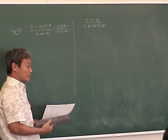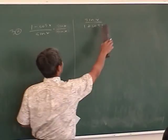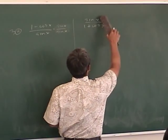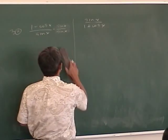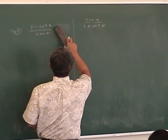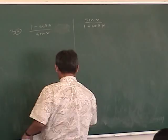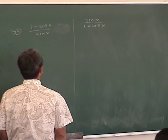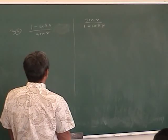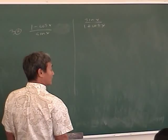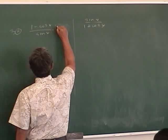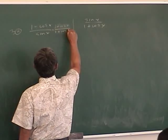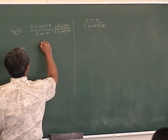Or you can multiply top and bottom by sine x, since sine squared x has an identity: 1 minus cosine squared x. Or you can multiply by the conjugate of the denominator, 1 minus cosine x. So there are four things you can do, and if you just do one of them it comes right out. Remember this technique — it comes up a lot in calculus.